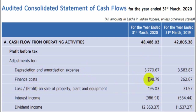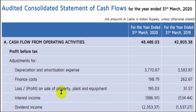Finance cost of 1.9 crores was also added back as it is of operating nature. The company had losses on sale of property, plant and equipment — this was a notional, non-cash loss, so 1.9 crores was added back because no cash went out of the business from that loss.